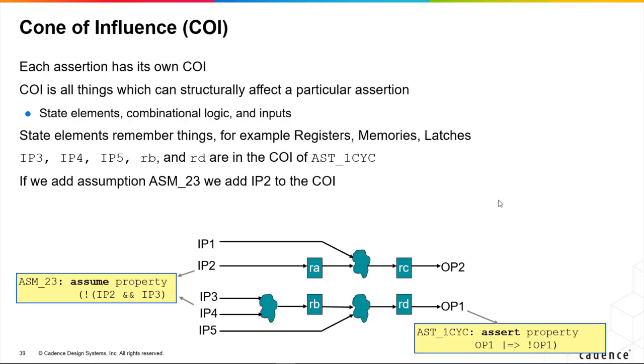Now we can make things worse in terms of COI size by adding assumptions. In this case we're writing an assumption which describes a relationship between IP2 and IP3.